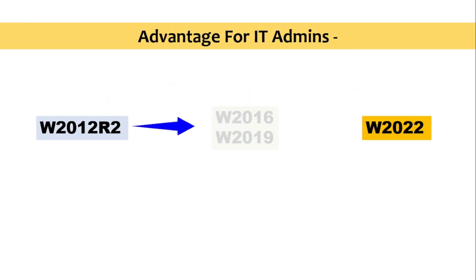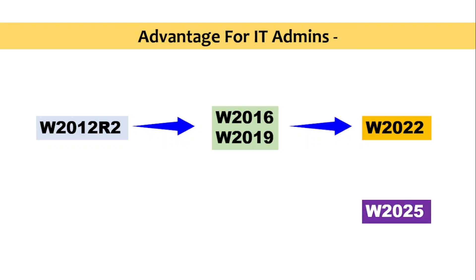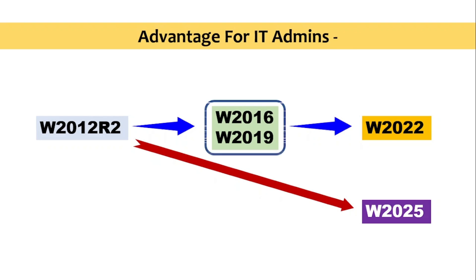What we need to do is first upgrade to 2016 or 2019, and then upgrade those to 2022. But after the introduction of 2025, we can directly upgrade from 2012 R2 to 2025, skipping the intermediate step of upgrading to 2016 or 2019 first and then to 2022.